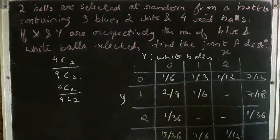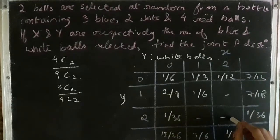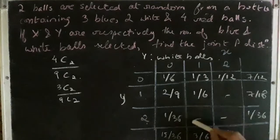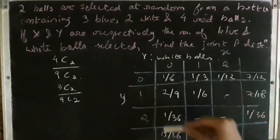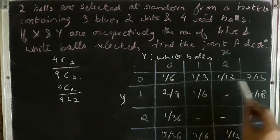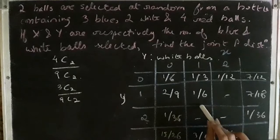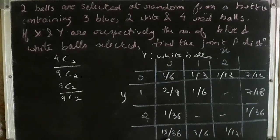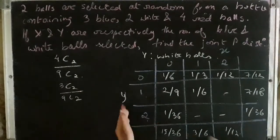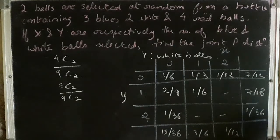Three boxes in the table are empty because they correspond to combinations where the total number of balls would exceed 2 — for instance, x=2 and y=1 gives 3 balls, and x=2 and y=2 gives 4 balls. So these three cells are not part of our domain. The values outside the main table, such as 7/12 and 7/18, are called the marginal distributions. Their use comes later.